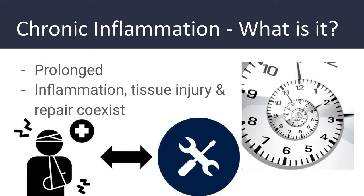In contrast to acute inflammation, which can last days to weeks, chronic inflammation develops and exists over a longer time frame, often weeks to months or even years. During this time, inflammation, tissue injury, and attempts to repair coexist in varying combinations. In acute inflammation, both inflammation and tissue injury occur but over a much shorter period, and progression to chronic inflammation typically occurs when there is an inability to eliminate the inflammatory stimulus or completely heal the tissue damage.